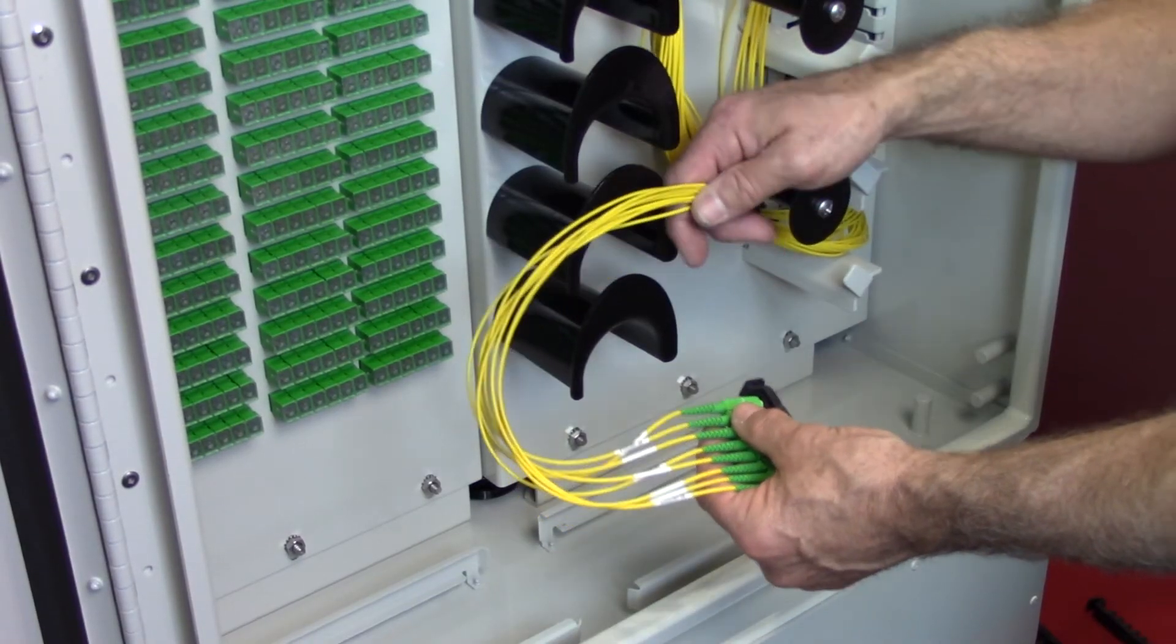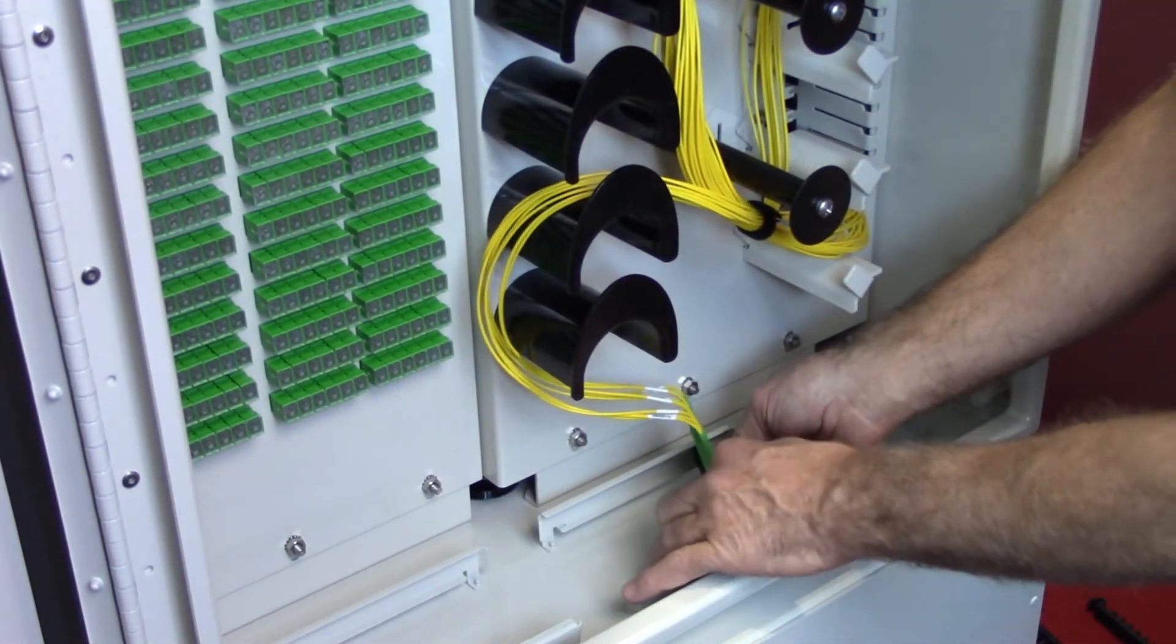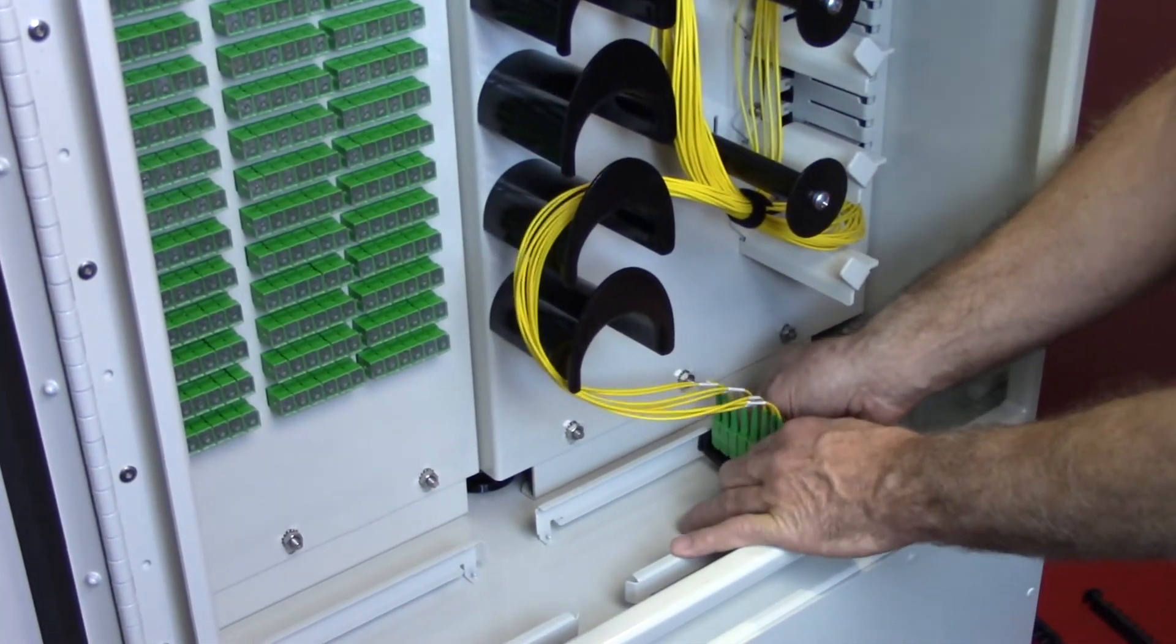For later service connections, unused splitter tail outputs may be conveniently stored in the splitter tail storage section of the cabinet.